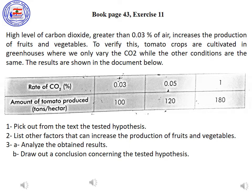Tomato crops are cultivated in greenhouses where we only vary the carbon dioxide level, while the other conditions remain the same. The results are shown in the table below. Observe the table: the rate of carbon dioxide increases from 0.03 to 0.05 to 1. Then, what is the effect of this increase on the amount of tomato produced? It also increases from 100 to 180.